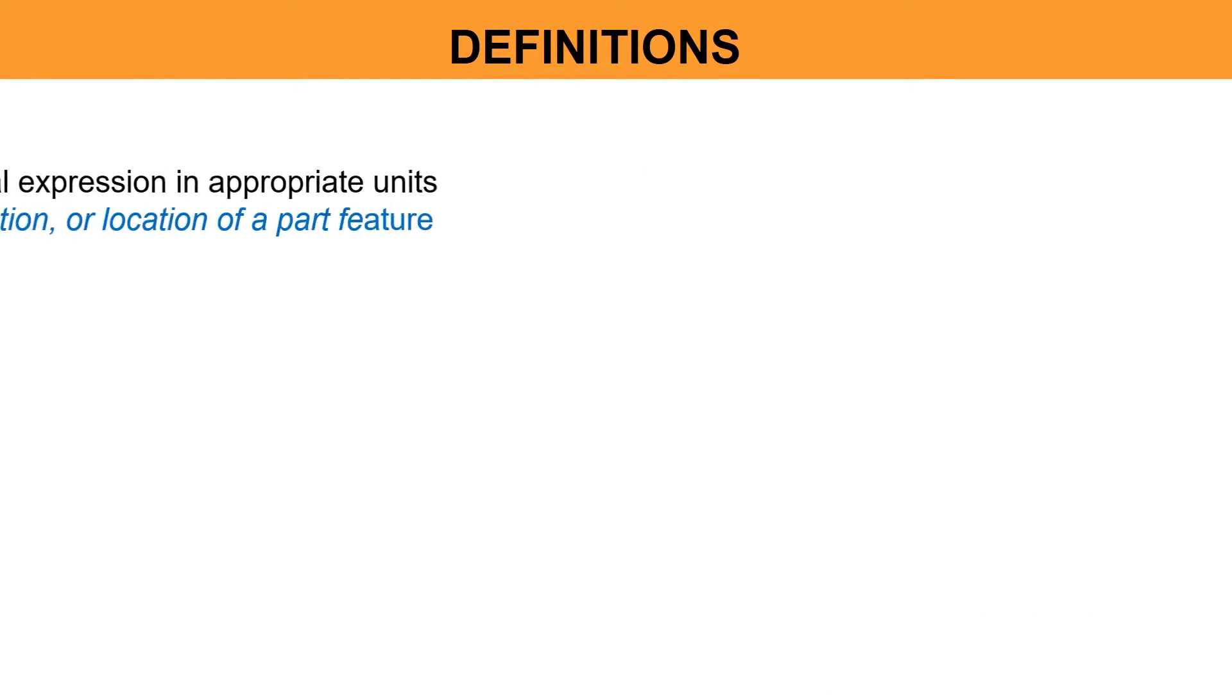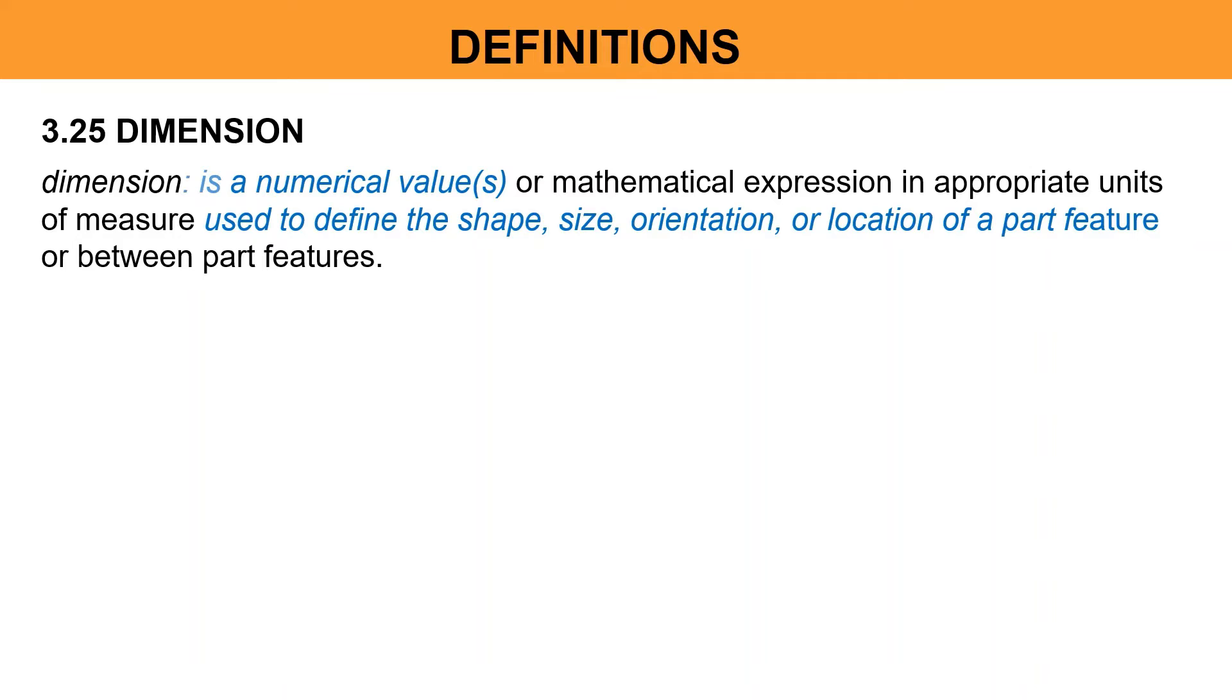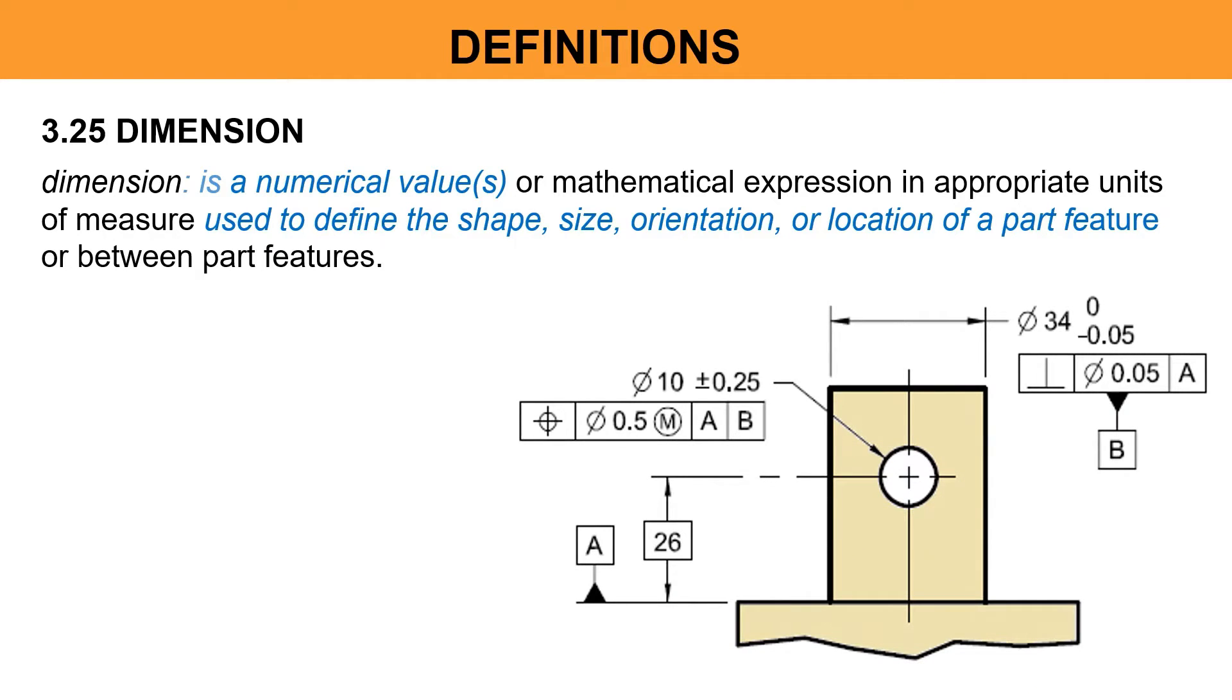Let us define first what is Dimension and then what is Basic Dimension. Dimension is a numerical value or mathematical expression in appropriate units of measure, used to define the shape, size, orientation, or location of a part feature or between part features.